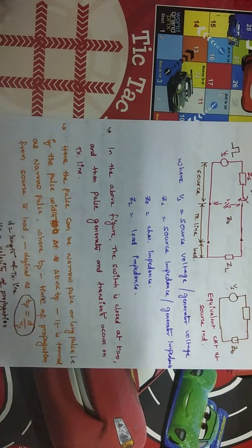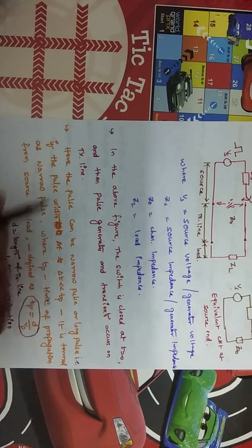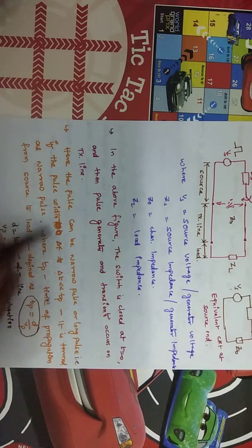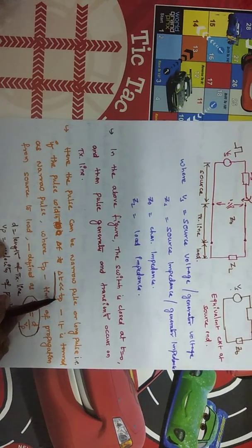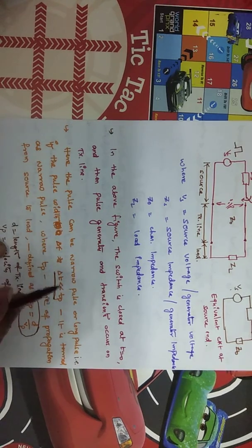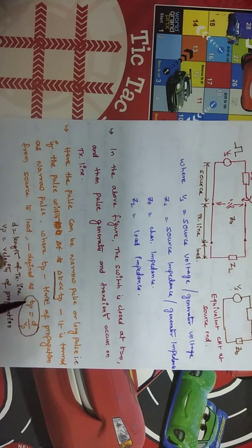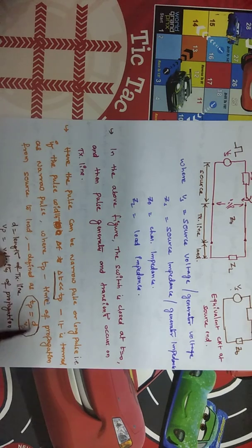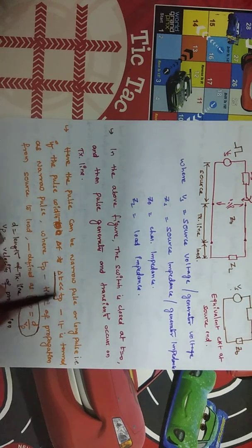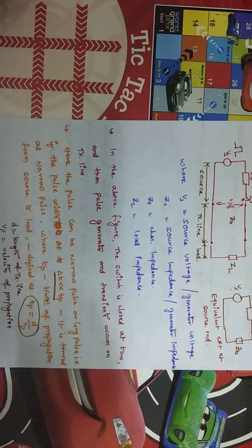The pulse can be of two types: a narrow pulse or a long (broad) pulse. If the pulse width delta t is much much less than tp, where tp is the propagation time of the wave from source to load — defined as the length of the line divided by the phase velocity vp — then the pulse is defined as a narrow pulse. If delta t is much much greater than tp, it is called a long pulse or broad pulse.